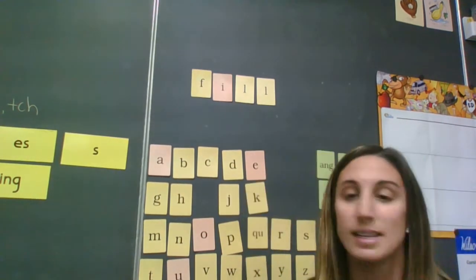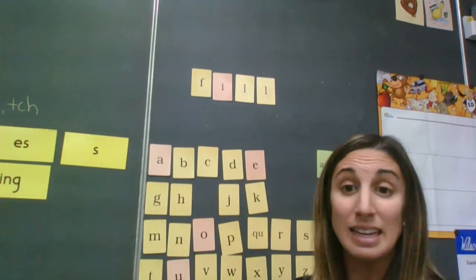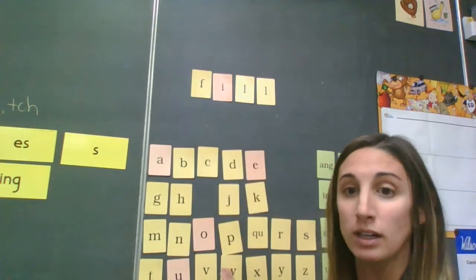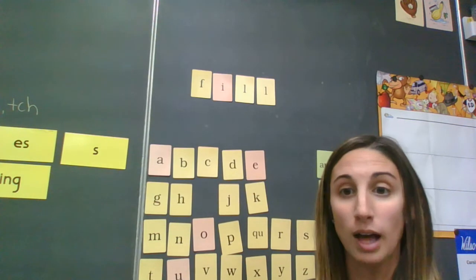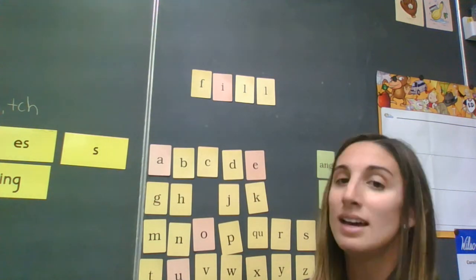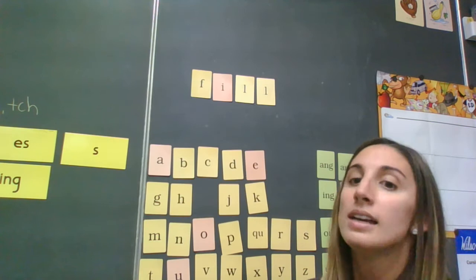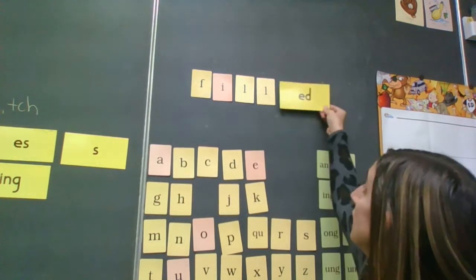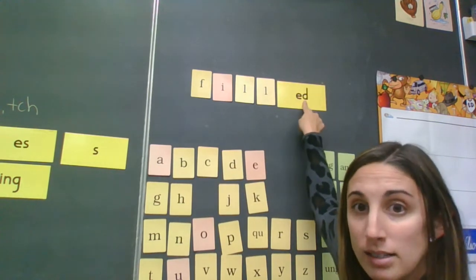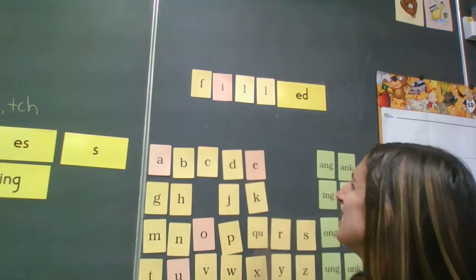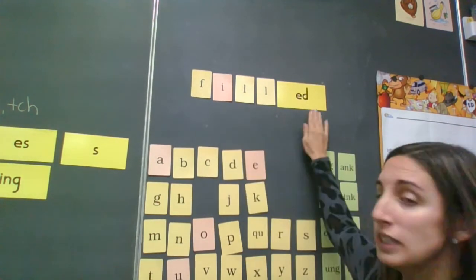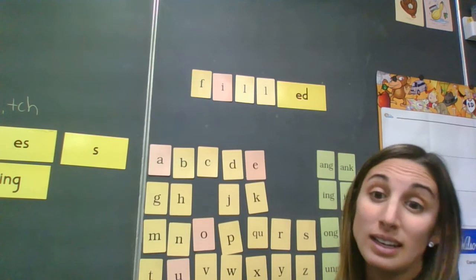Now, the suffix E-D doesn't always sound like a T when it's attached to the end of a word. This base word is the verb fill. Like, I had to fill my water bottle up before gym class. If I wanted to put this in the past and say, yesterday, I filled up my water bottle at school, I would again, since it already happened, attach my E-D suffix. And it doesn't sound like a T this time, does it? Fill. Filled. Right. This time, it sounds like a D. Good.